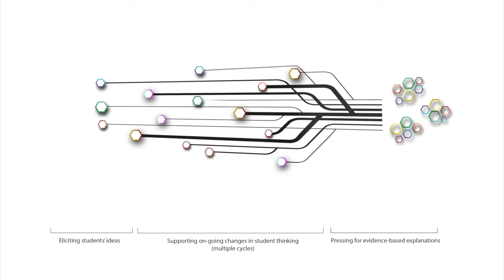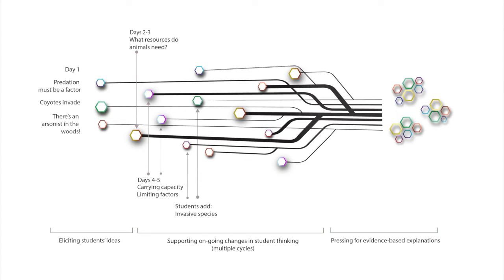In the final three days of the unit, Bethany will press students to use all available evidence to assemble a coherent and gapless explanation for the fluctuation of the hare population. On day one, Bethany elicits students' initial theories. Some students say that predators must be a factor, others believe that coyotes have invaded the territory, and others believe that an arsonist sets fire to the forest every 11 years. Bethany asks students to draw out their thinking in the form of models. On days two and three, Bethany introduces an activity around the resources that animals need to survive. On days four and five, the topic is carrying capacity and limiting factors. Meanwhile, students bring up personal experiences with invasive species, and although this was not part of Bethany's explanation, she incorporates it into all future discussions.